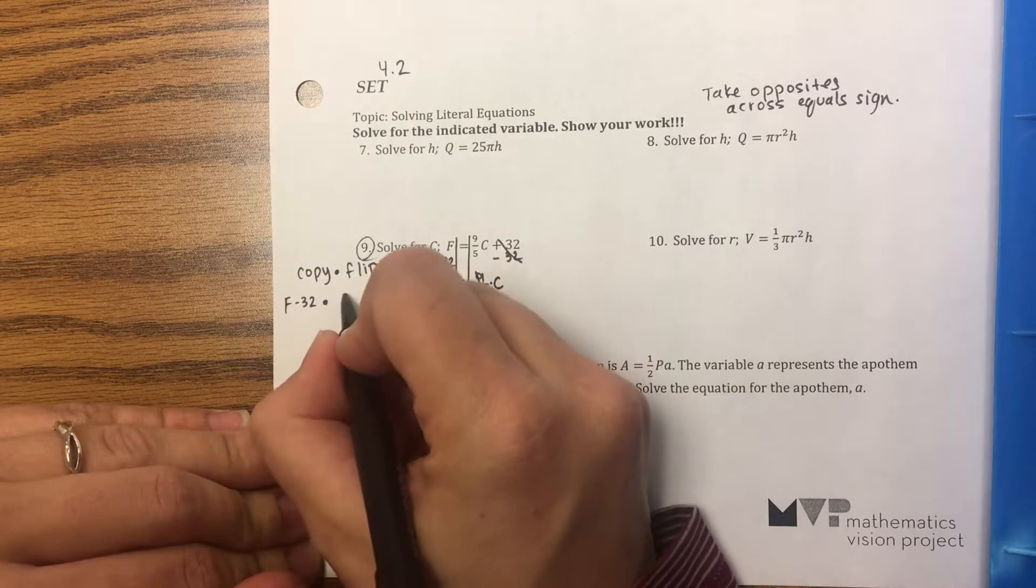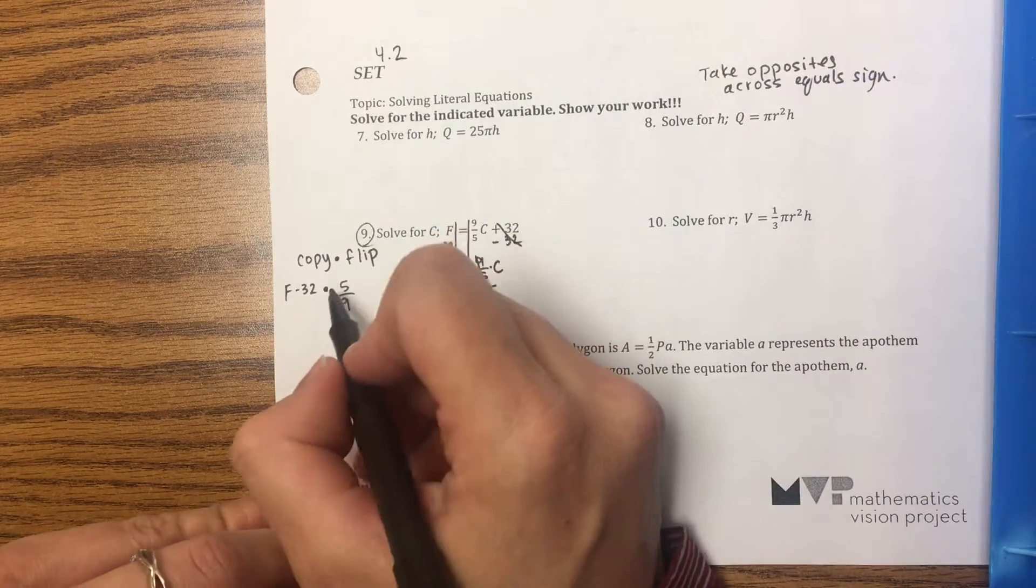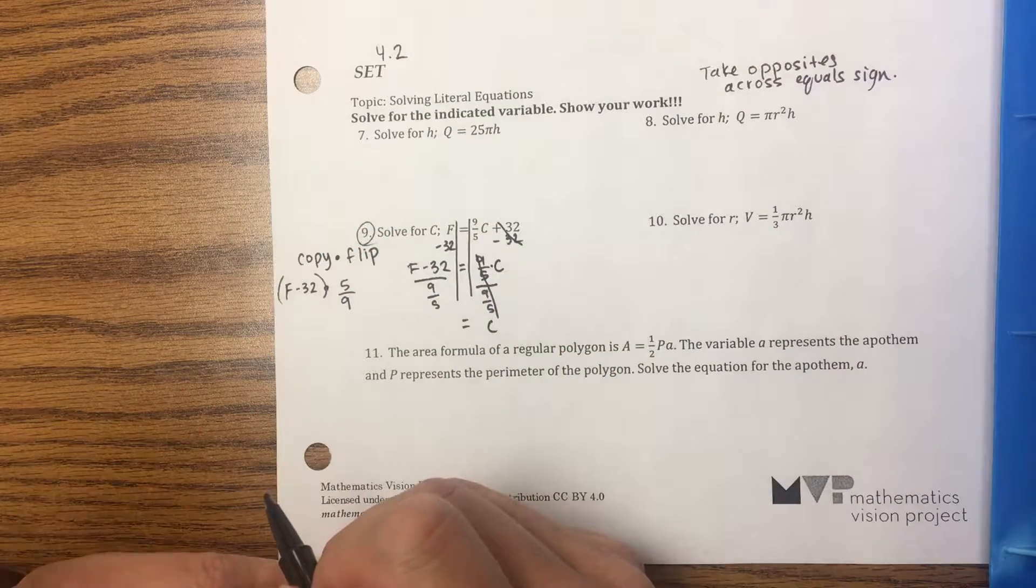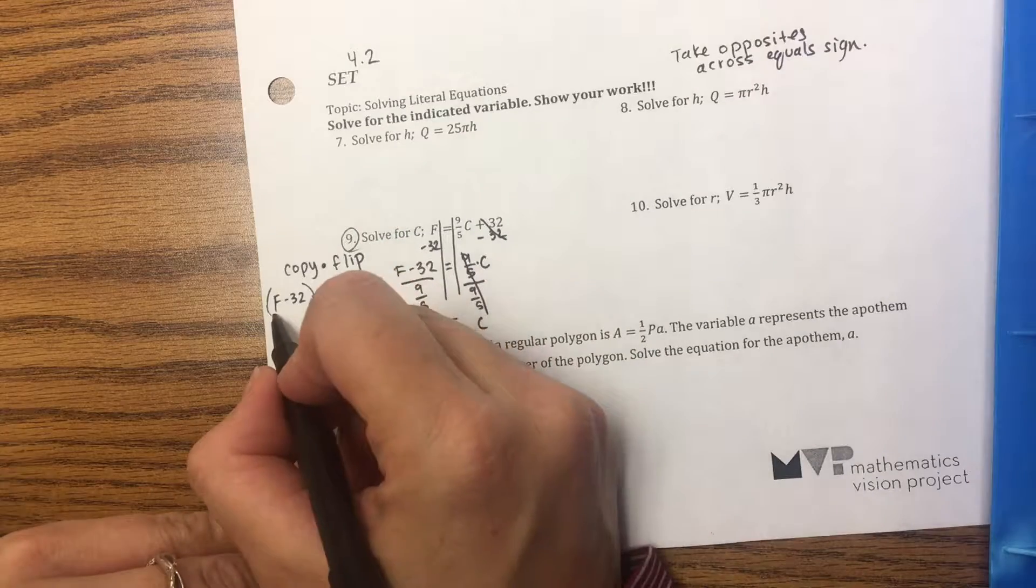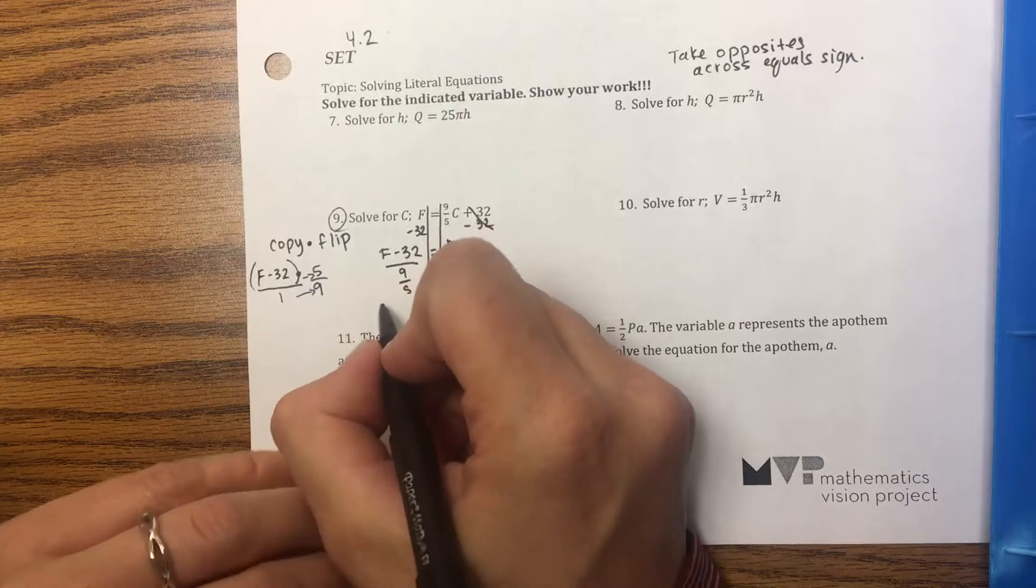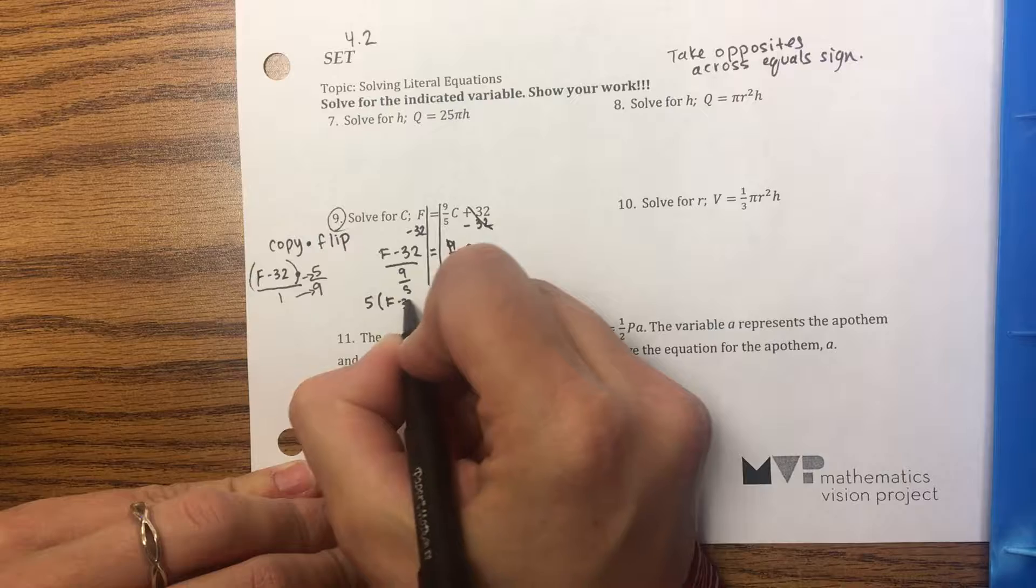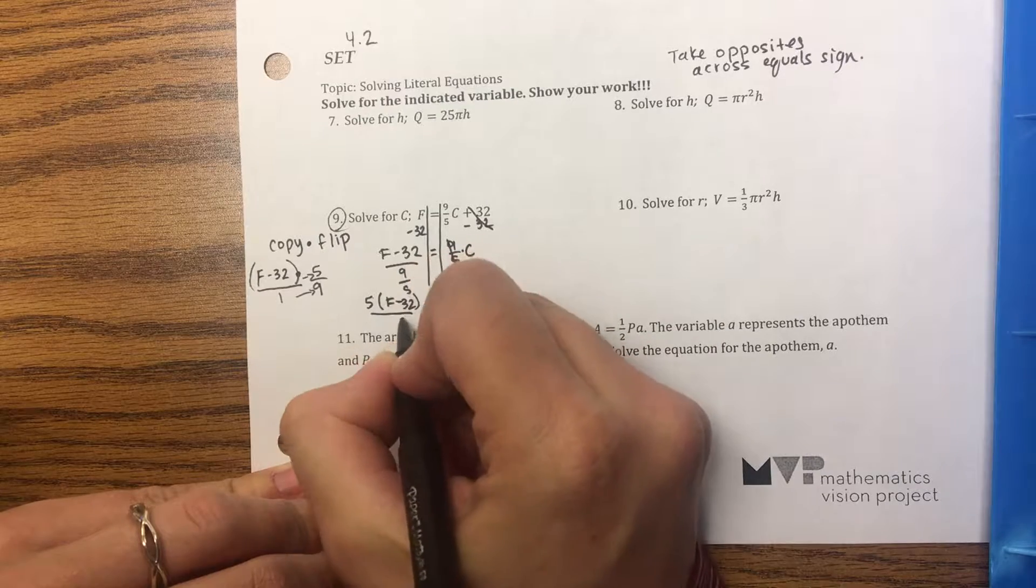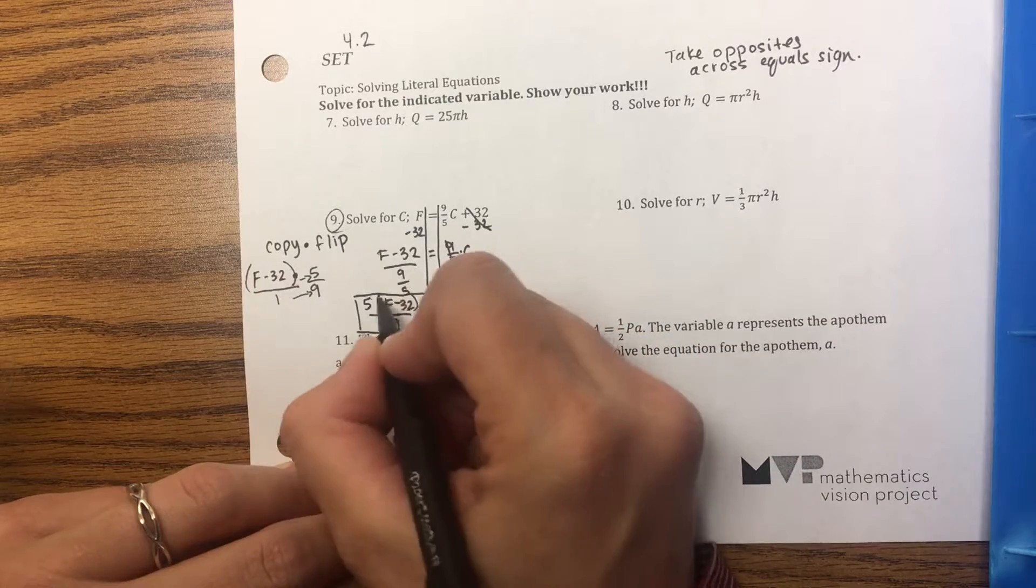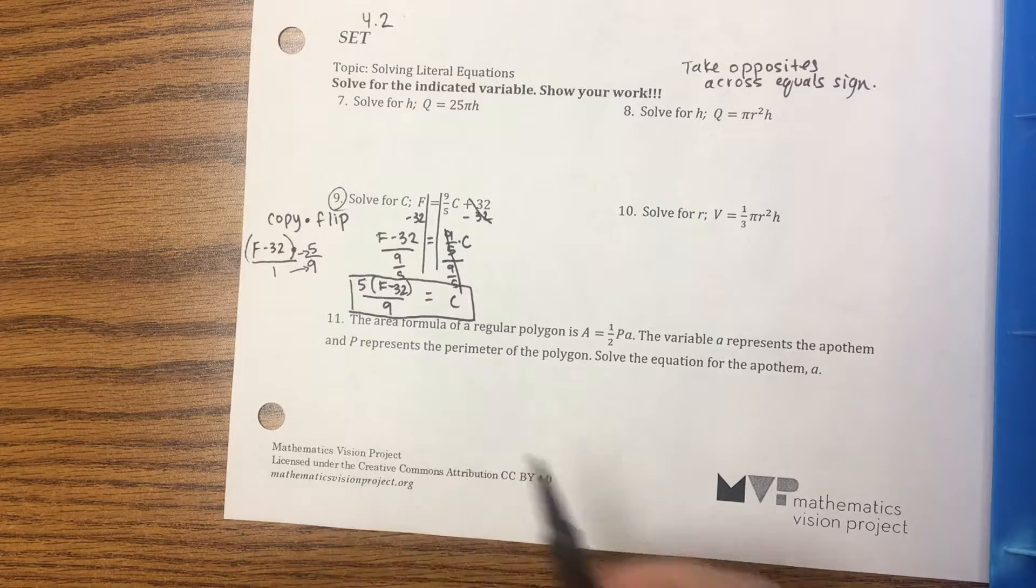So the top is the part you copy, F minus 32, dot, and then flip the bottom. Right now it's 9 over 5, I'm going to write it as 5 over 9. So I have 5 times F minus 32 all over 9 because we multiply straight across. When I rewrite that, I'm going to put the 5 first, F minus 32 all over 9. And that's as simplified as we can go. If you want to distribute the 5 you can, but that's as simplified as it gets.